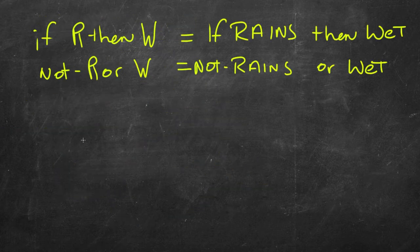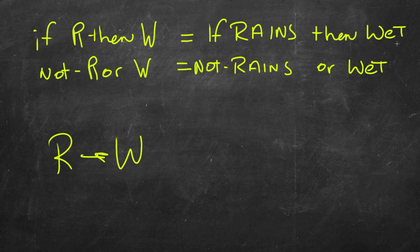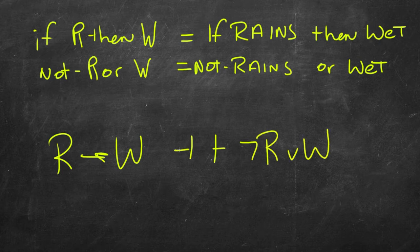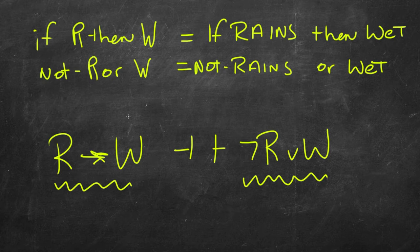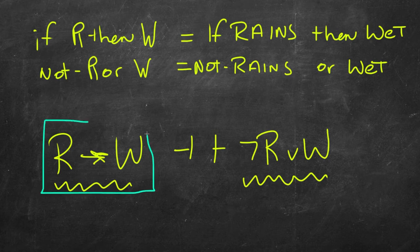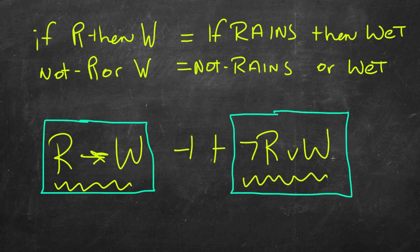If we let our conditional — if R then W — stand for 'if it rains then I get wet,' and let our disjunction be 'not R or W,' then what we're doing is reasoning from 'if it rains then I get wet' to 'either it does not rain or I get wet.' These two formulas are just two different ways of saying the same thing, so it's perfectly legitimate to replace the conditional with this disjunction.